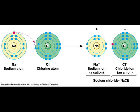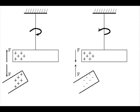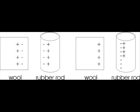It is because of this phenomenon that, for example, glass becomes positively charged when it is rubbed with a silk cloth, whereas ebonite acquires a negative charge on being rubbed with a woolen cloth.